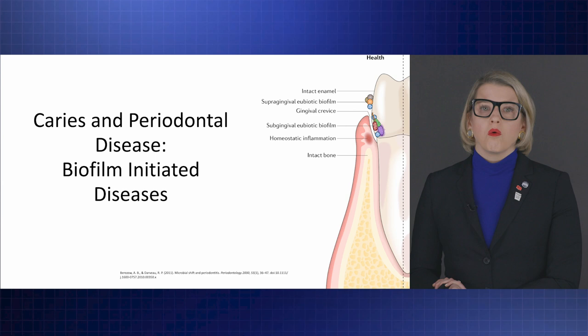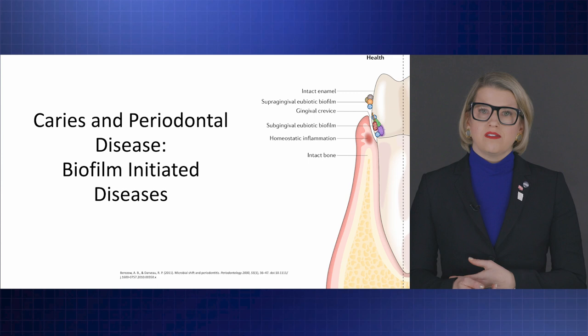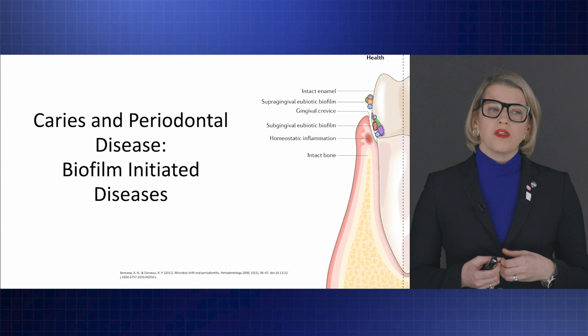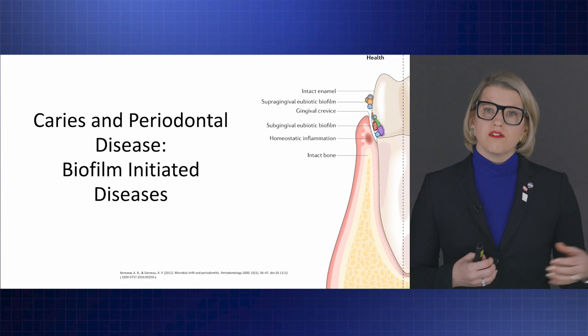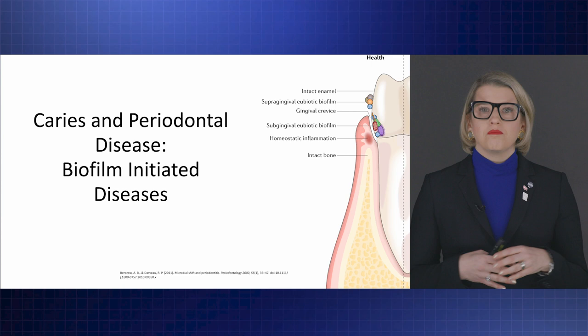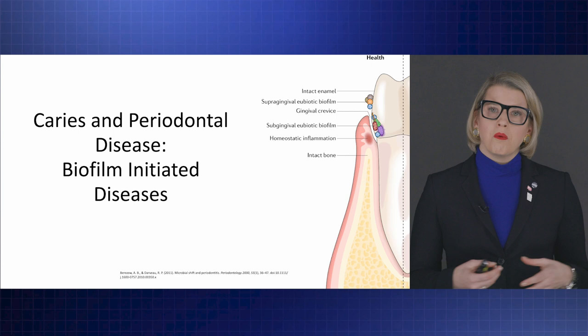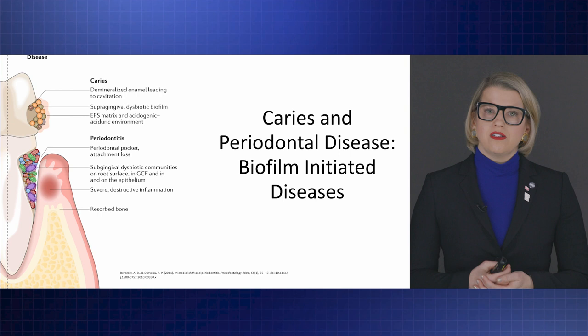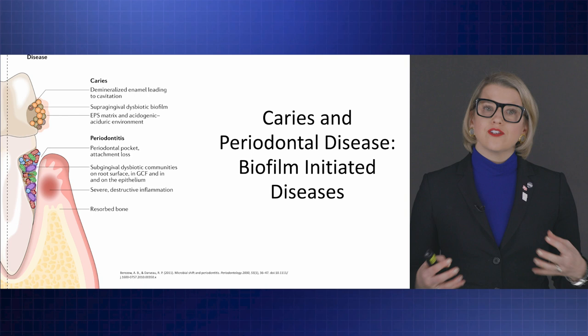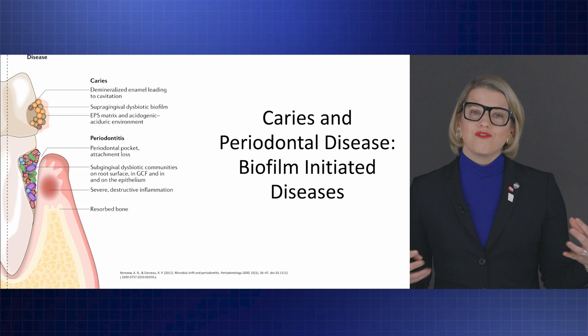Both caries and periodontal disease are biofilm-initiated diseases. In health, we have a homeostasis with eubiotic bacteria — whether that be non-cariogenic bacteria or low levels of cariogenic bacteria and oral pH and substrate that doesn't allow for caries to form. Or if we have supra- and subgingival periodontal microflora that are eubiotic enough and are removed frequently enough that we don't see chronic inflammation resulting in destruction of hard and soft tissue. When that homeostasis is disrupted, we start to see demineralization, caries formation, and destruction of the hard and soft tissues that support the teeth.